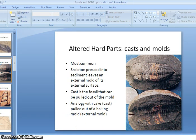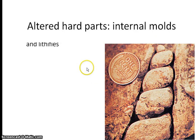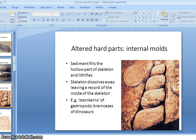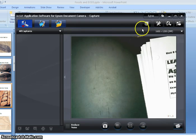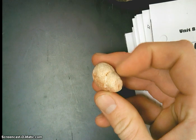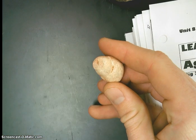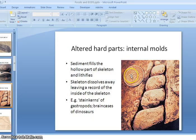Related to cast and mold are internal molds. Imagine a spiral shell — what happens is the organism gets filled with sediment, and when the organism dissolves away, the sediment inside is preserved, giving us an internal mold. These don't typically have a lot of detail, but you can still see the interior shape of the shell and its internal lines.